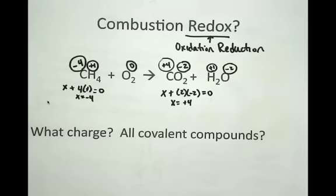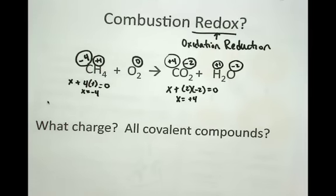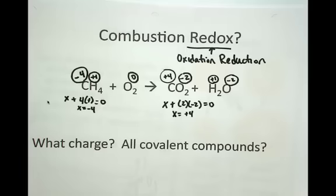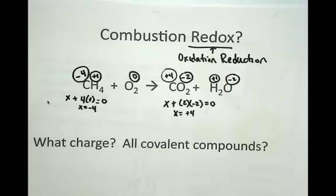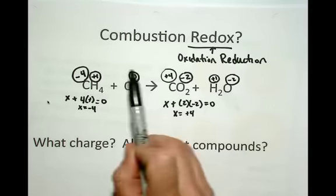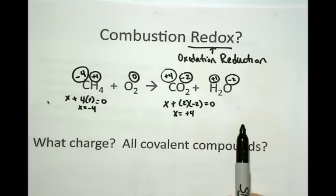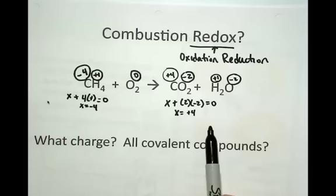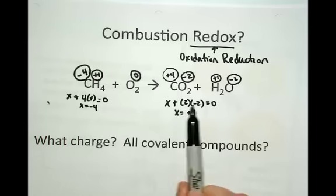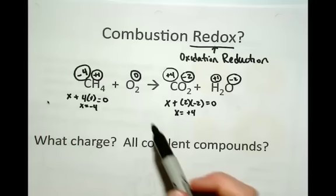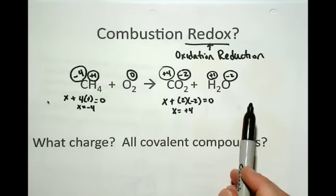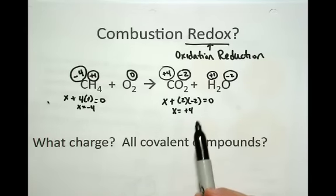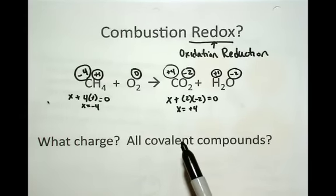That's how we label oxidation numbers — you'll need to look at the rules and practice back and forth. What you're looking for to identify whether something is a redox reaction is whether there's a change in the oxidation numbers across the chemical change. If there's a change in the oxidation numbers, that means electrons have been transferred from one species to another.